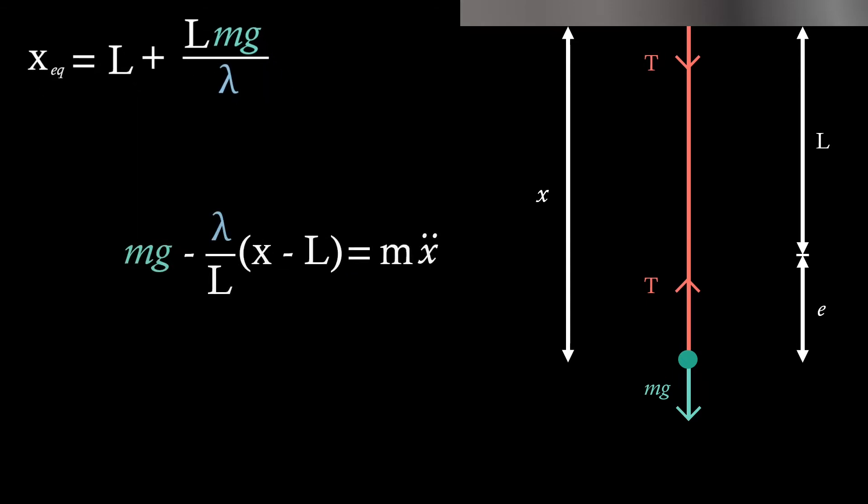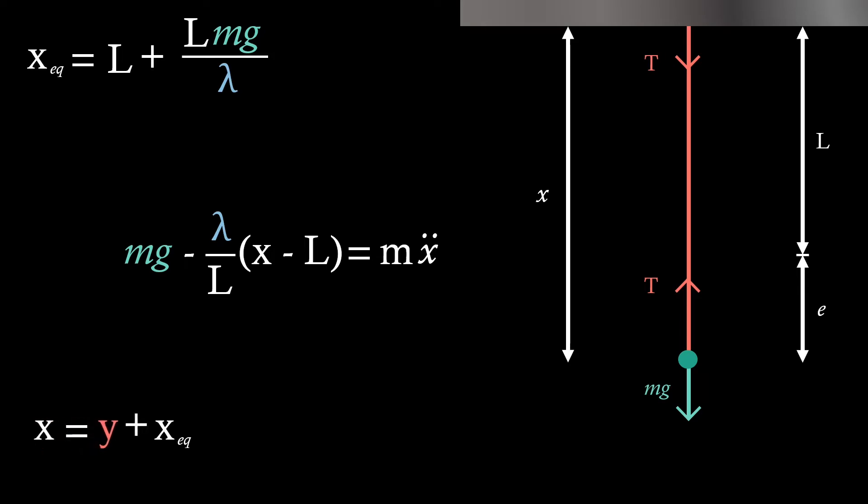Now let's bring back our original equation. We're going to use this trick where we let y equal x minus our equilibrium point. Now before substituting this value in, we're going to rearrange. So we'll say x is equal to y plus xEQ.